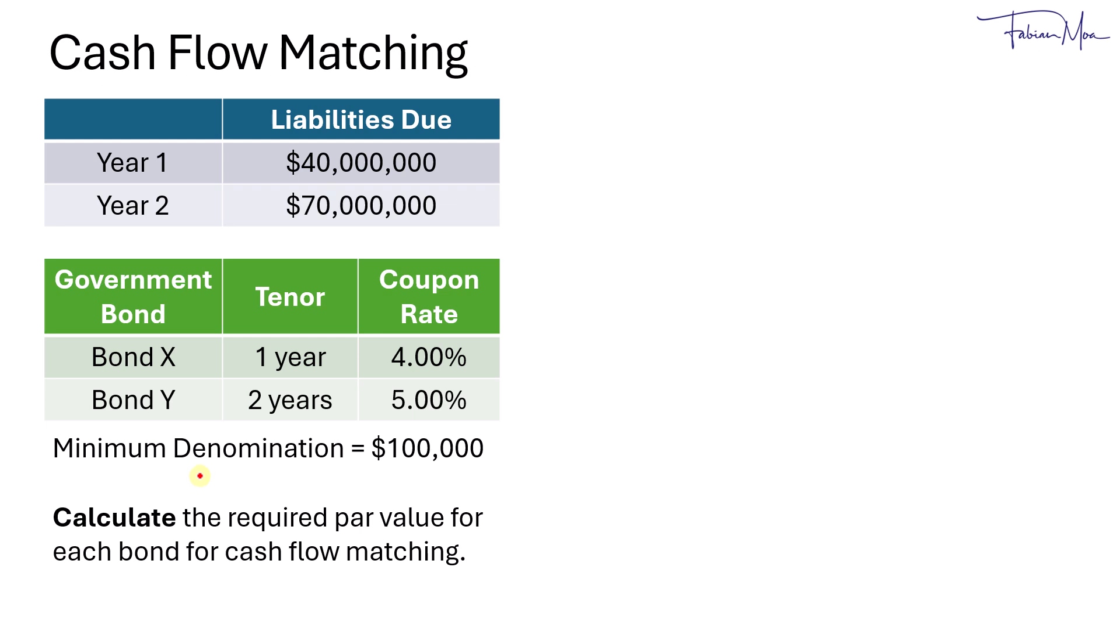In this example, we are solving for the required par value of each bond for cash flow matching. First, let's look at the liabilities due. Year 1 has a liability of $40 million. Year 2 has a liability of $70 million. We have two government bonds available for investment. Bond X has a tenor of 1 year with a 4% coupon rate. Bond Y has a 2 year tenor with a 5% coupon rate. The minimum denomination for each bond is $100,000.